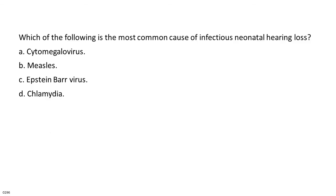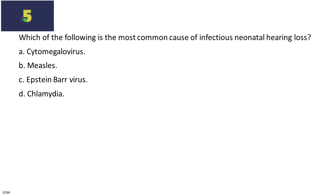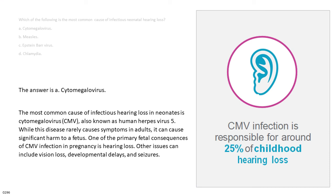Which of the following is the most common cause of infectious neonatal hearing loss? A. Cytomegalovirus. B. Measles. C. Epstein-Barr virus. D. Chlamydia. The answer is A. Cytomegalovirus. The most common cause of infectious hearing loss in neonates is cytomegalovirus (CMV), also known as human herpes virus 5. While this disease rarely causes symptoms in adults, it can cause significant harm to a fetus. One of the primary fetal consequences of CMV infection in pregnancy is hearing loss. Other issues can include vision loss, developmental delays, and seizures.